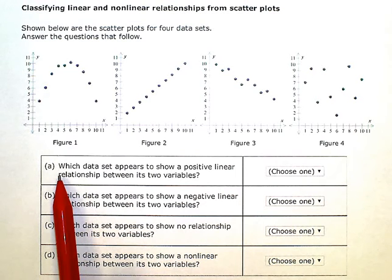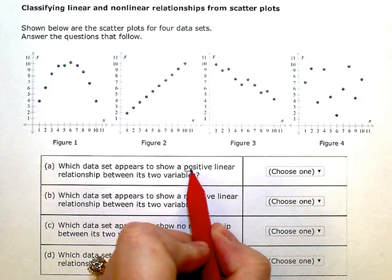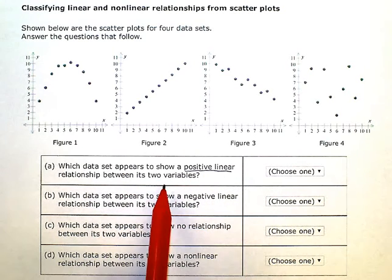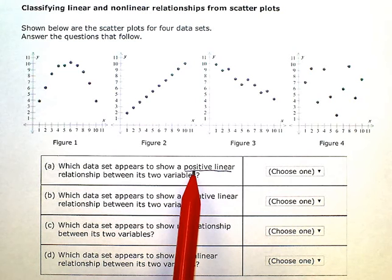Question A says, which data set appears to show a positive linear relationship between its two variables? So I'm looking for one that falls into a pretty good line and has a positive slope.